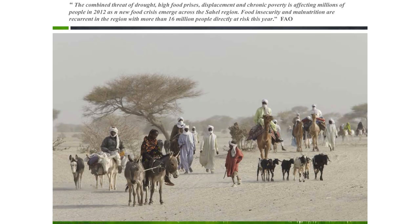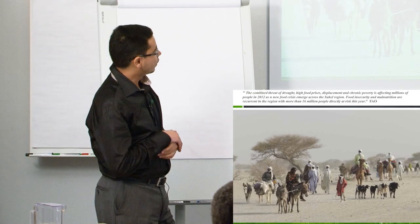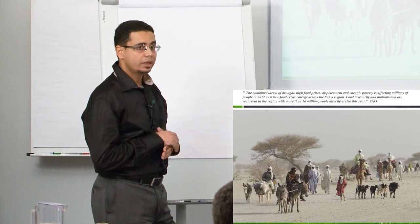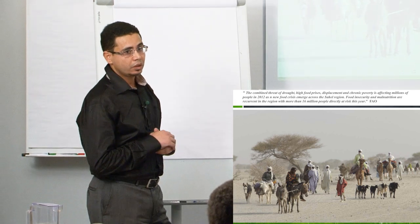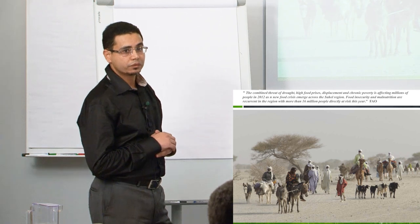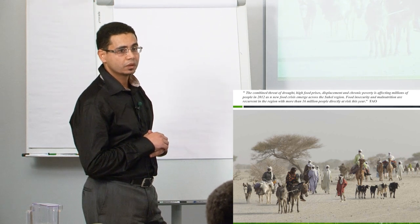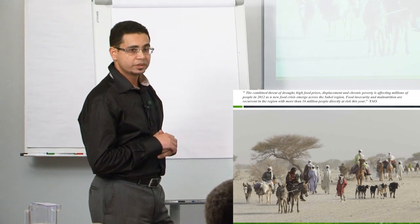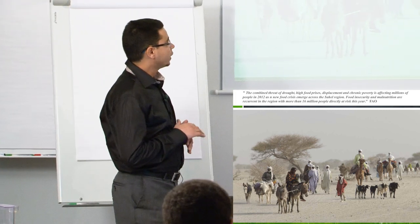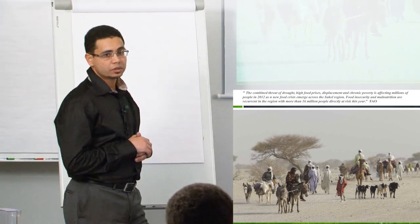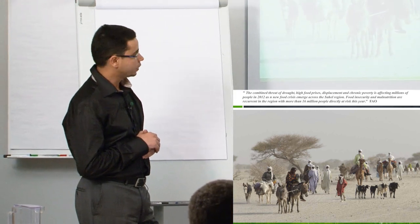The Sahel, according to the latest records, is really very vulnerable to climate change, and there is recurrent drought affecting the region. When drought happens in the region, it causes losses in terms of production, in terms of human lives, disease, displacement, and sometimes conflicts. So the climate change risk is very important for the region.